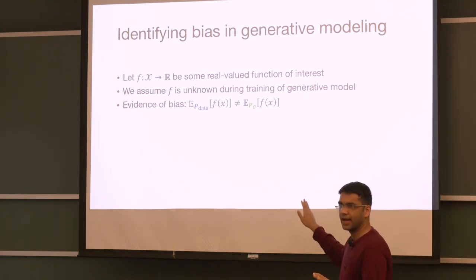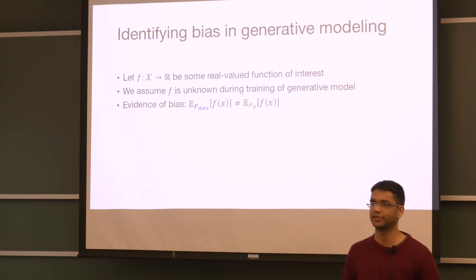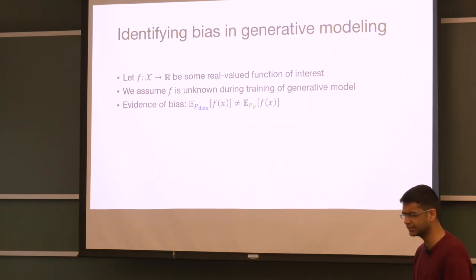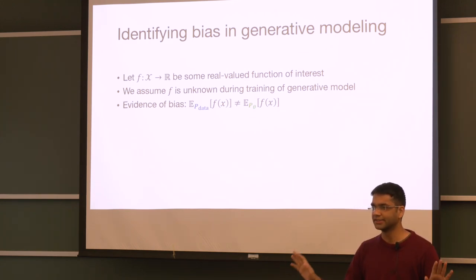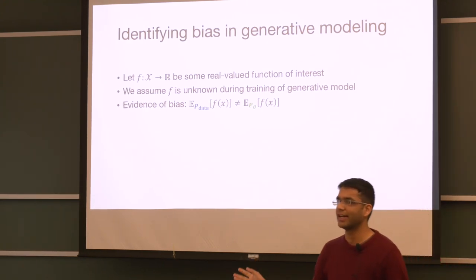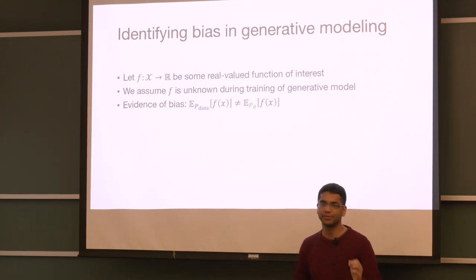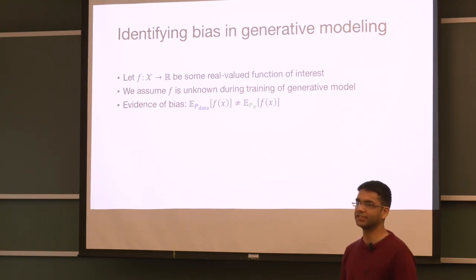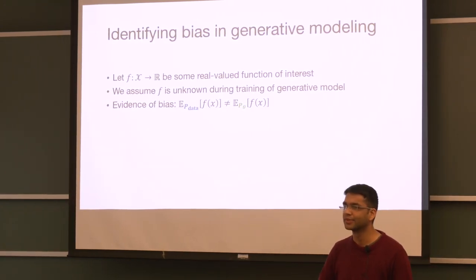We're going to think of some function F which maps data — either generated or from a data distribution — to some scalar value in the real space. We assume we don't know F during training, which remains faithful to the paradigm of unsupervised learning where we train a model using only unlabeled data and test on a variety of different F's. The evidence of bias, mathematically, is when the expectation of this function F differs under the data distribution and the model distribution. Anytime we find these expected values are different under the two distributions, we say that this model is biased with respect to that particular F.